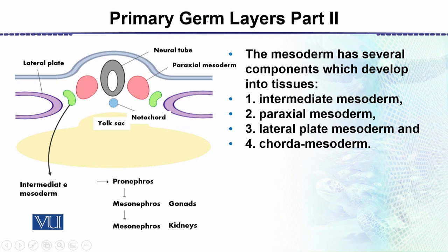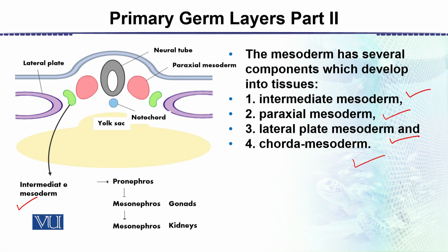The neural tube is ectodermal in origin. The mesoderm is divided into different types: the paraxial mesoderm, the intermediate mesoderm, and the lateral plate mesoderm. These are the distinct mesodermal regions we can identify from the diagram.